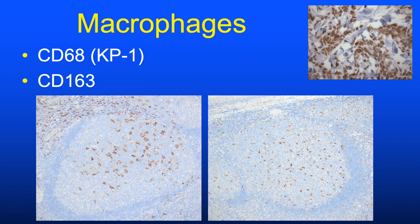Commonly employed macrophage markers include CD68 and CD163, with CD163 regarded as the more specific. In side-by-side stains of lymphoid tissue, the tingible body macrophages in the follicle center are highlighted comparably by both, and distinguishing which is which can be challenging.